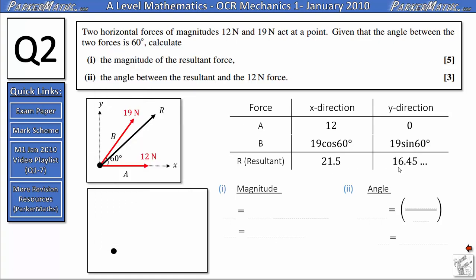Now that I've got an x and a y component, I can redraw this diagram with two equivalent forces but this time they'll be at right angles. So I'm going to have 21.5 Newtons going horizontally in the x direction and 16.45 Newtons going vertically in the y direction and my resultant force will go from the beginning of this vector to the end of this vector.